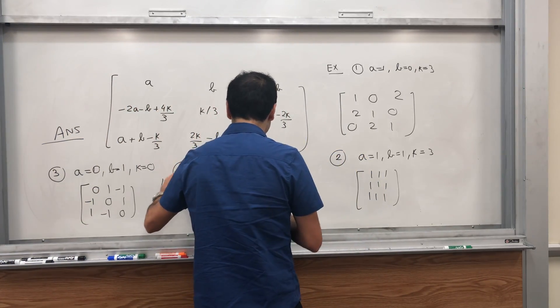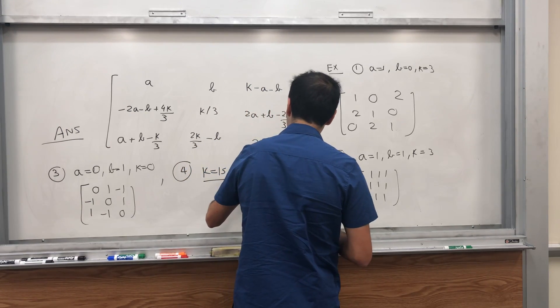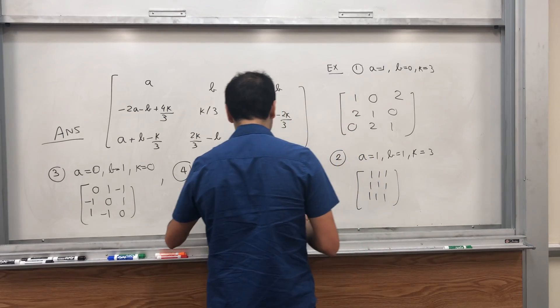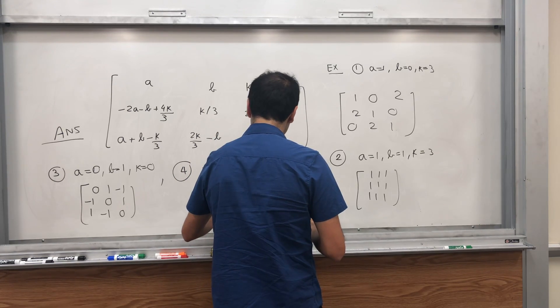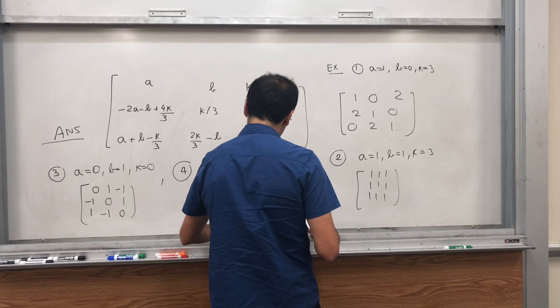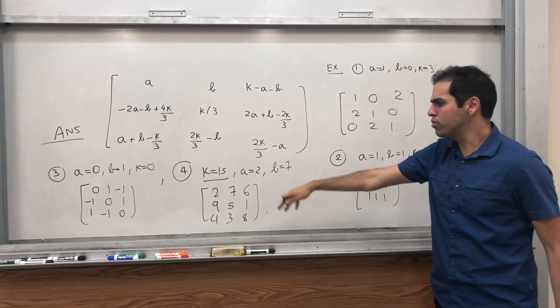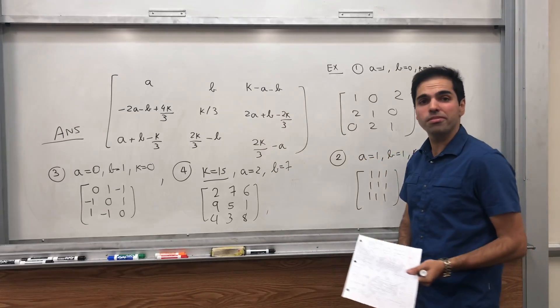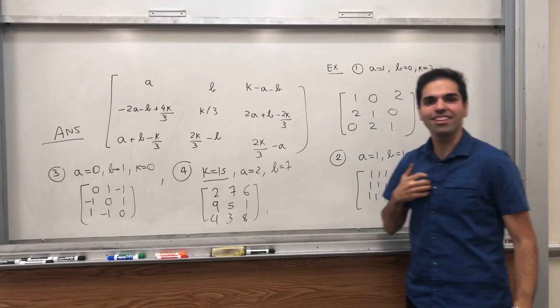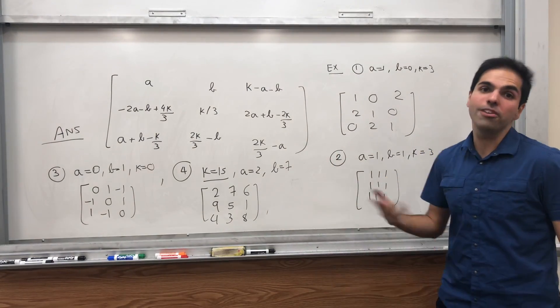But here is also my favorite example. Suppose k is 15, a equals 2, b equals 7. Then it turns out you get the following: 2, 7, 6; 9, 5, 1; 4, 3, 8, which is a matrix again whose row sum, column sum, diagonal sum is all the same, and you use all the integers from 1 to 9. So this is something called the magic square. I think in that way you can also generate magic squares, so I think that's really cute.